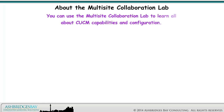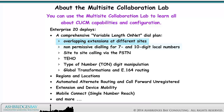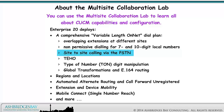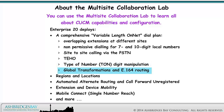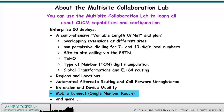You can use the Multi-Site Collaboration Lab to learn all about CUCM capabilities and configuration. Enterprise 20 deploys a comprehensive variable-length on-net dial plan, overlapping extensions at different sites, non-permissive dialing for 7 and 10-digit local numbers, site-to-site calling via the PSTN, TAHO, type-of-number digit manipulation, global transformations and E.164 routing, regions and locations, automated alternate routing and call forward unregistered, extension and device mobility, mobile connect or single number reach, and more.